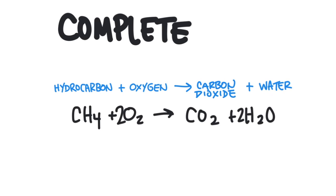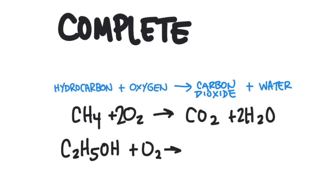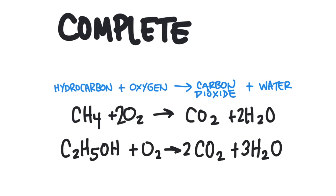Let's try another example — this time let's see how ethanol would combust. Here's ethanol reacting with O2. Of course it's going to produce CO2 and H2O — this is a complete combustion reaction. Then we just have to go ahead and balance it, so we'll put a 3, a 2, and then a 3 to get everything to balance out. There is our complete combustion reaction: we just made carbon dioxide and water.